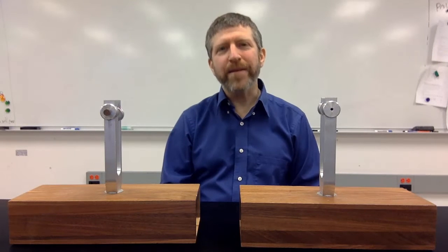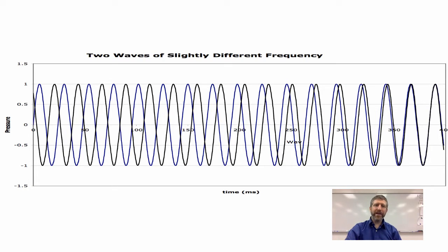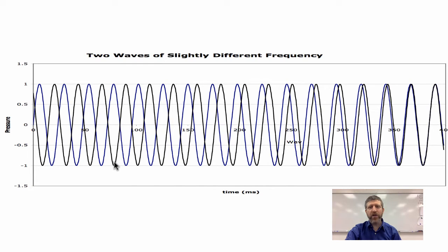Here's why beats happen. What I have here is a graph of two waves of slightly different frequency, graphing pressure versus time. We've got two different longitudinal waves happening at the same time. You can see that sometimes they completely cancel each other — one has a compression when the other has a rarefaction. But other times they're exactly in phase, meaning compressions overlap in time, or rarefactions overlap in time.